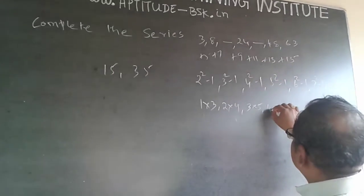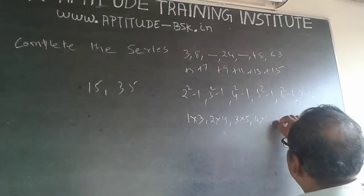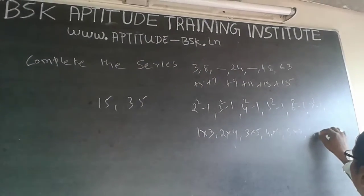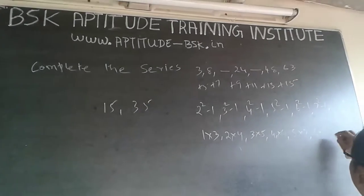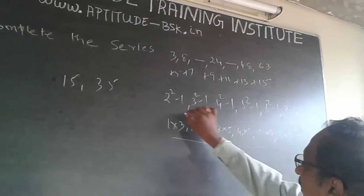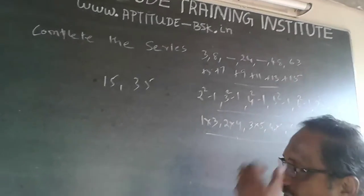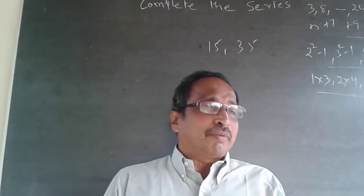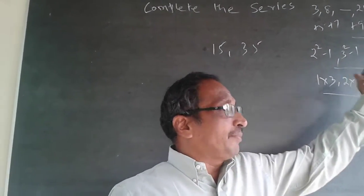4 into 6 is 24, then 5 into 7 will be 35, then 6 into 8 will be 48, and 7 into 9 will be 63. All 3 methods are following different patterns but the answer is same.